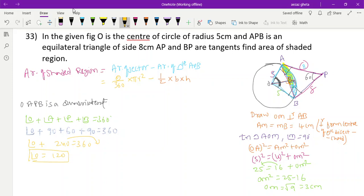Now substitute: 120 by 360 into 22 by 7 into 5 into 5 minus half into base AB which is 8 into height OM which is 3. This simplifies to 22 into 25 divided by 3 into 7 minus half into 8 into 3. That's 550 divided by 21 minus 12. Calculating 550 by 21 and then subtracting.